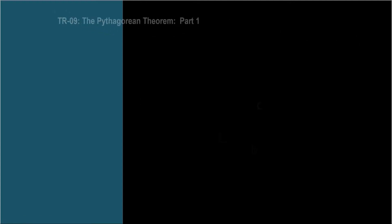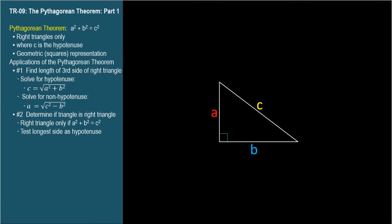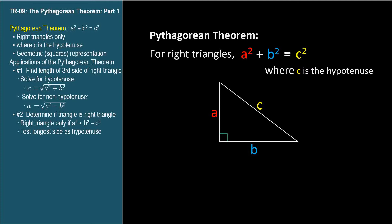The Pythagorean Theorem is an equation that describes the relationship between the lengths of the sides of a right triangle. The equation is a squared plus b squared equals c squared, where c is the length of the hypotenuse and a and b are the lengths of the shorter sides.